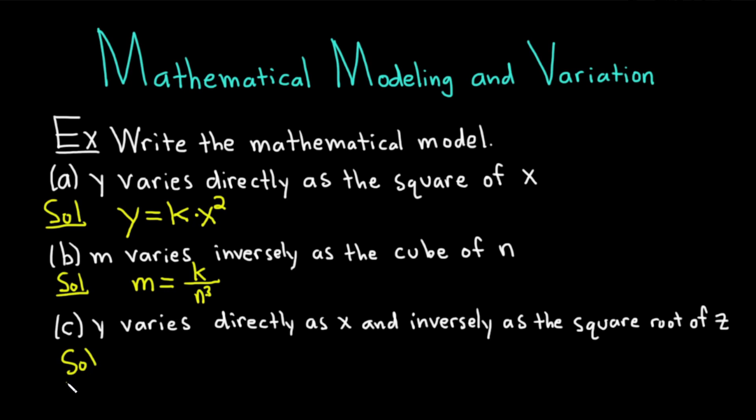Part C, let's work through this one. It says y varies directly as x and inversely as the square root of z. Let's do it one step at a time. Y equals—directly as x means k times x, because directly means you multiply. Then you divide, because it says inversely, by the square root of z. So it's kx over the square root of z. Let's check that. Y varies directly as x means k times x, and inversely as the square root of z means you divide by the square root of z. Very nice.